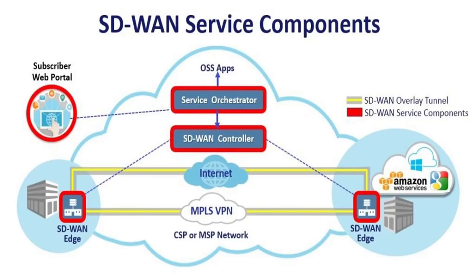Looking at the service components diagram: we can see there are OSS apps and an SD-WAN controller which controls the SD-WAN edge devices, and we have internet and MPLS VPN connecting two sides — which could be a customer, service provider, or MSP network. Then we have web services and multiple sites. There are two types of tunnels created; the yellow lines represent SD-WAN overlay tunnels. Using encryption technologies, SD-WAN agents can create overlay tunnels that use the physical connectivity available over the internet, sending traffic as a VPN or secure traffic protocol, and taking decisions based on network conditions.